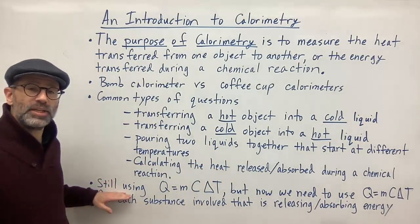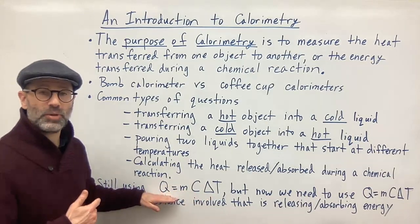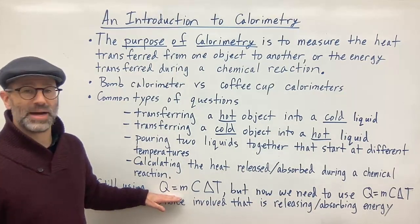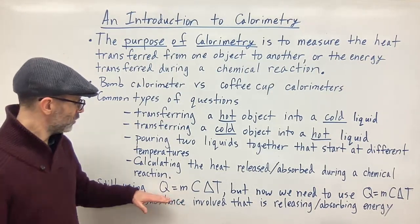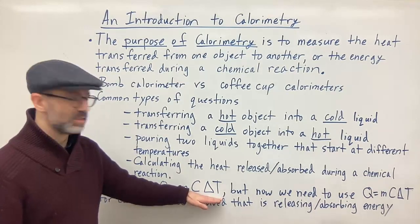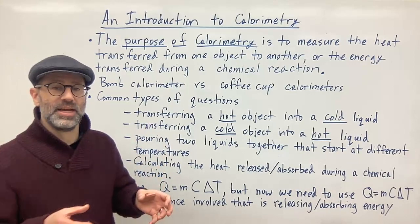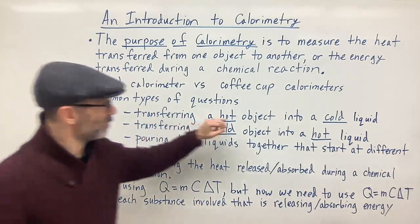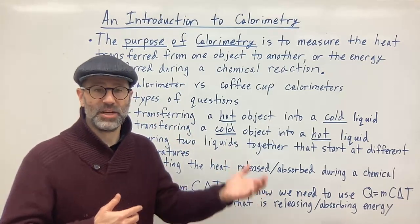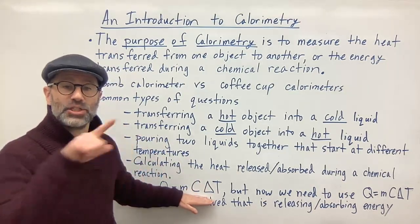Because we're dealing with heat absorption and heat release, we're still going to be using Q equals MCAT — mass times the specific heat capacity times the change in temperature — to calculate the amount of heat absorbed or released by an object, solution, or liquid. But now we're going to use this equation for multiple substances. If I'm mixing two substances together, or taking a hot object and throwing it into a cold liquid, I now have two substances involved in the heat transfer — one gaining energy and the other releasing energy.